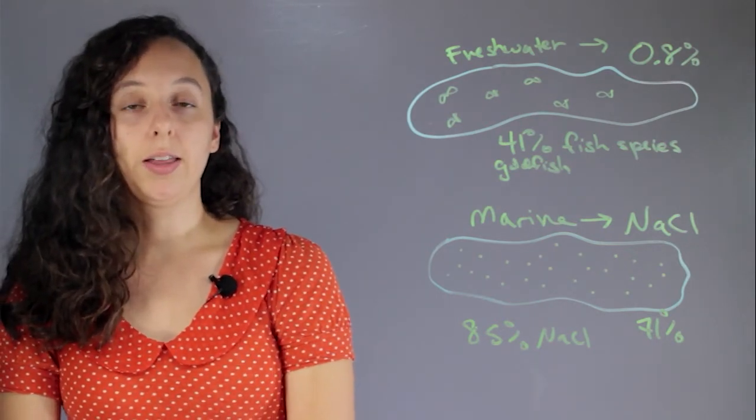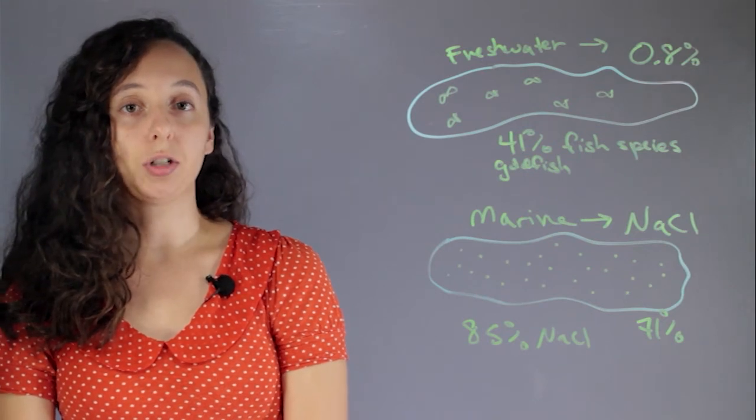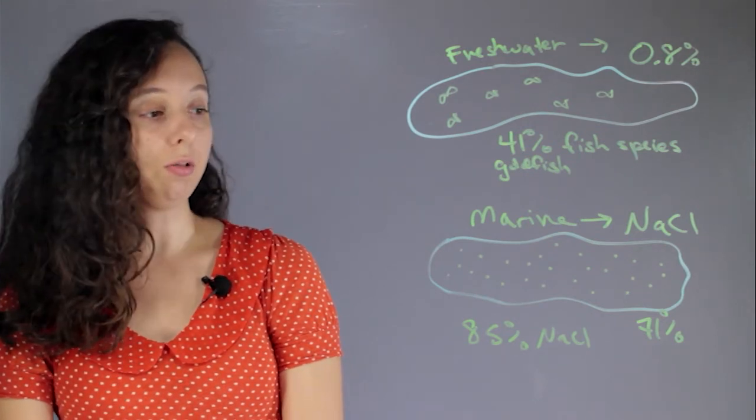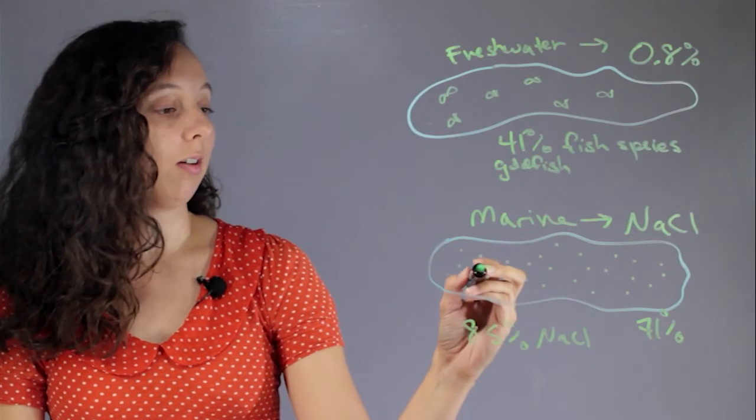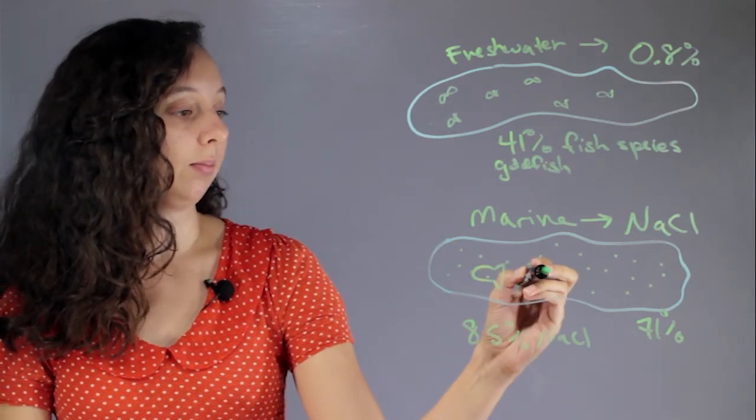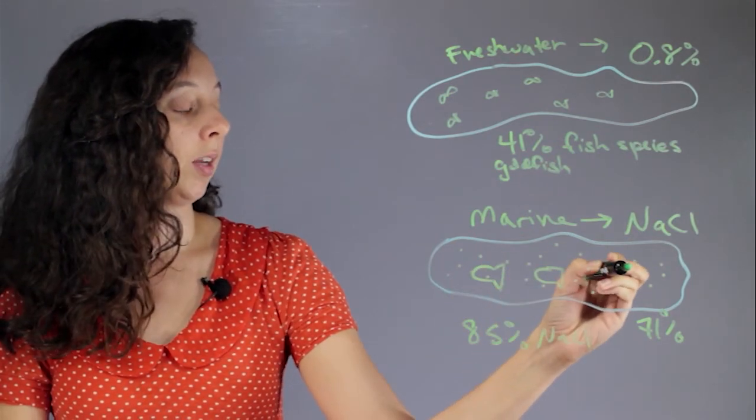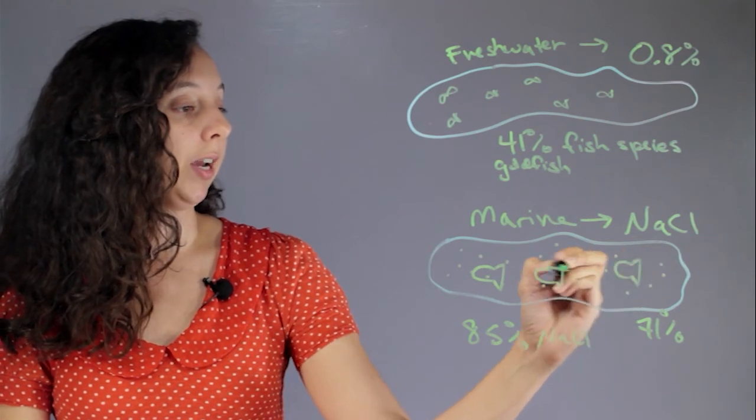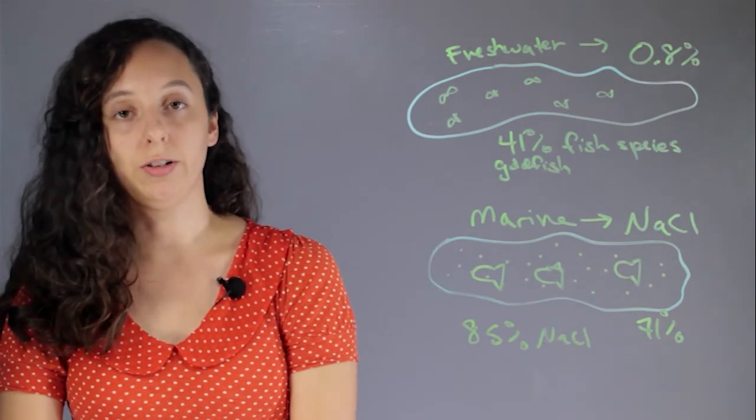And it's not like saltwater is bad, it's just specific. For instance, tuna can only live in marine environments. So if you have a tuna, if you take it and put it in a lake, it will also eventually die.